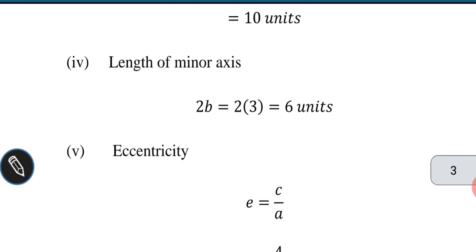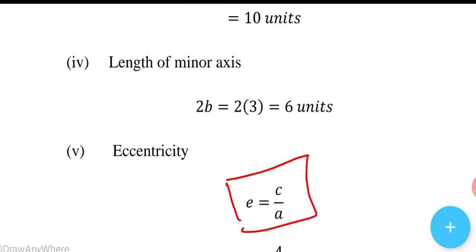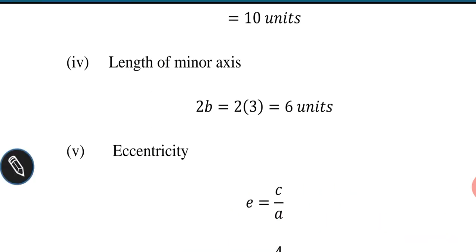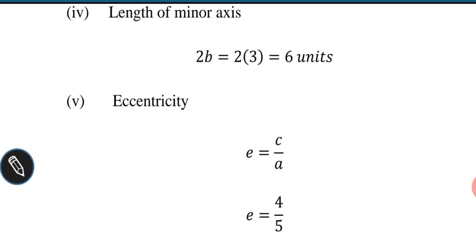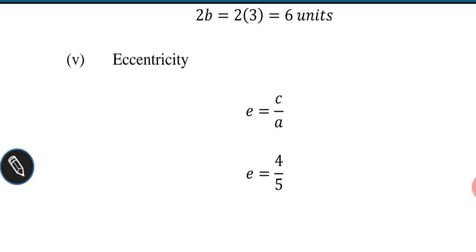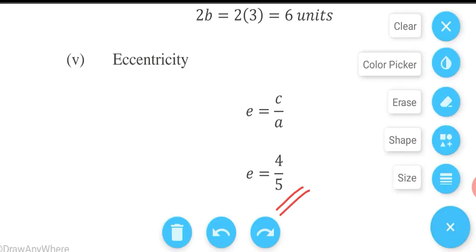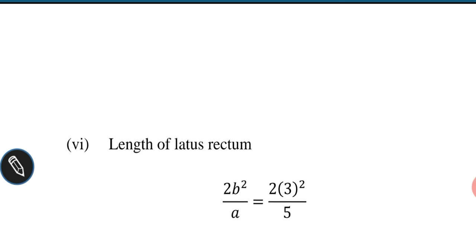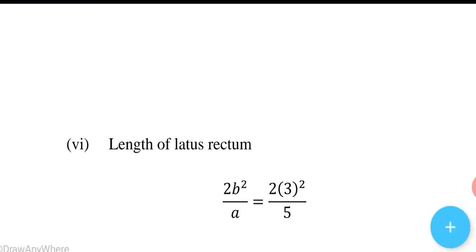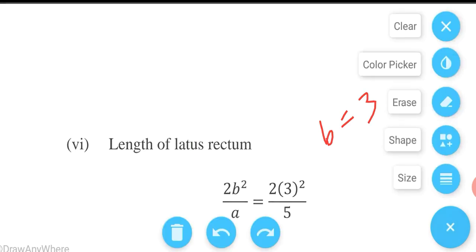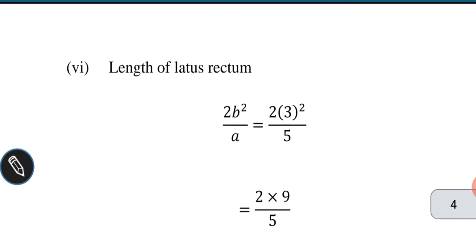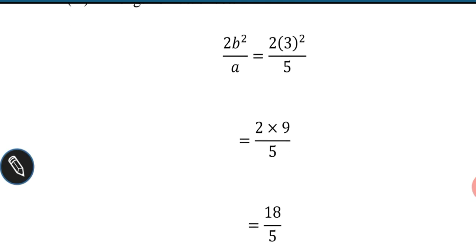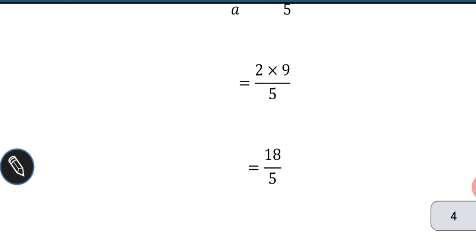The eccentricity e is equal to c by a. The value of c is 4 and a is 5, so e equals 4 by 5. The length of the latus rectum is 2b squared by a, which equals 2 into 9 divided by 5, giving 18 divided by 5.